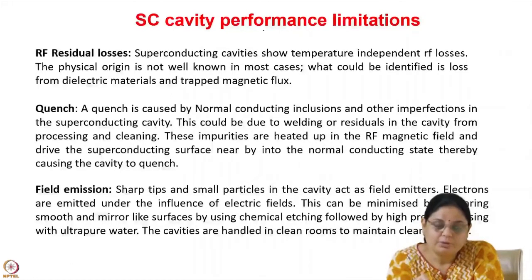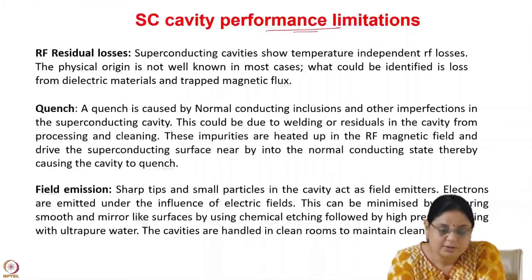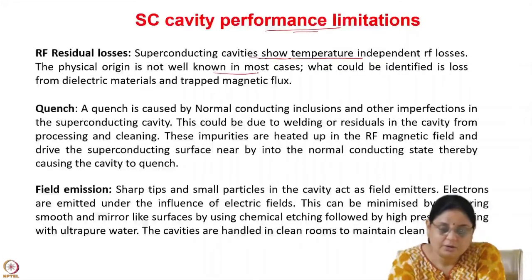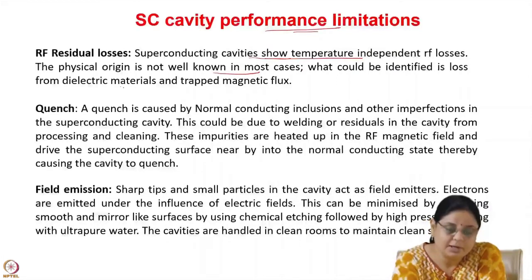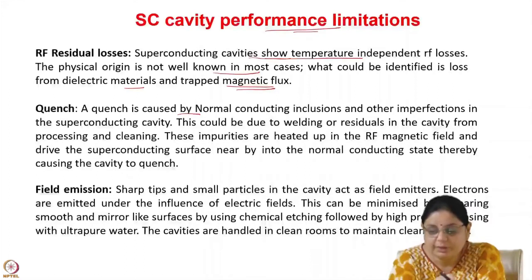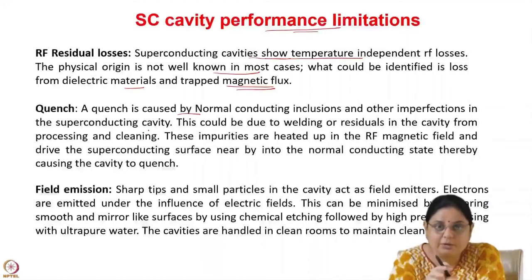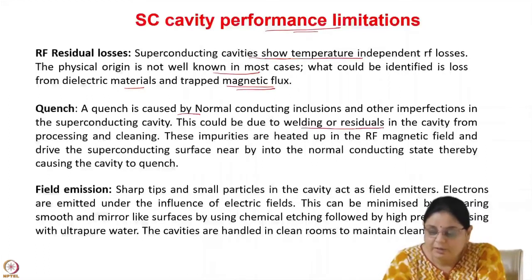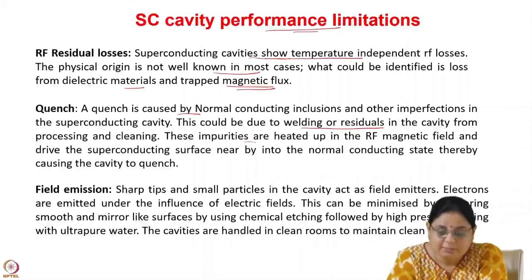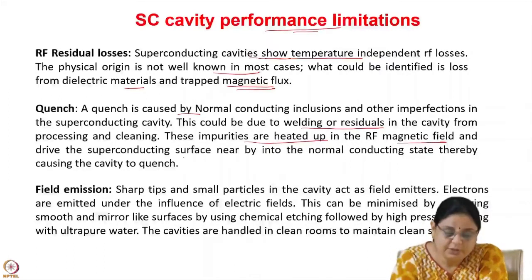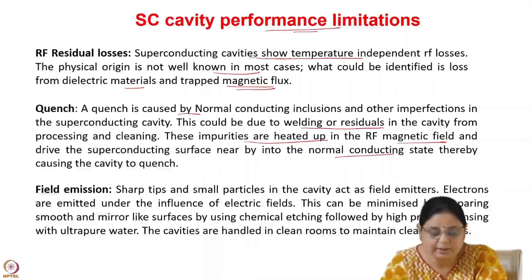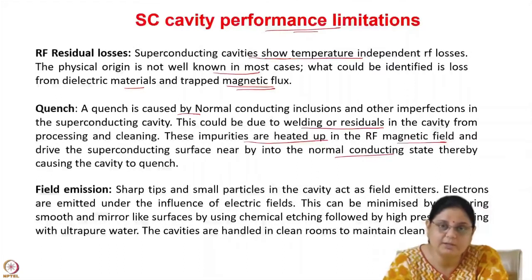There are several factors that limit the performance of superconducting cavities. One is RF residual losses: superconducting cavities show temperature-independent RF losses whose physical origin is still not understood in most cases; identified sources include loss from dielectric materials and trapped magnetic fields. Quench is caused by normal conducting inclusions or imperfections on the cavity surface — from welding or processing residuals. These impurities are heated in the RF magnetic field and drive the nearby superconducting surface into the normal conducting state, causing the cavity to quench. Quench means transitioning from the superconducting to the normal conducting state.